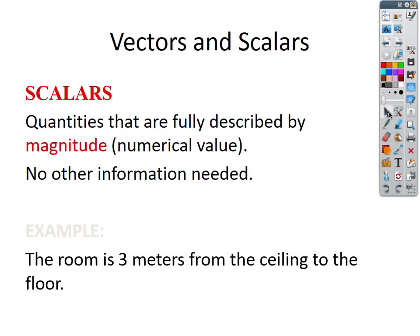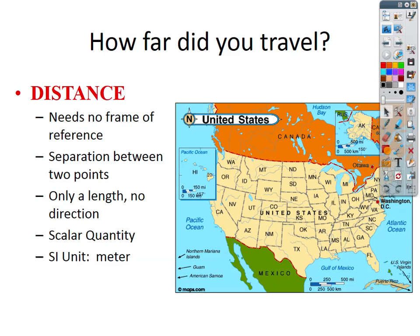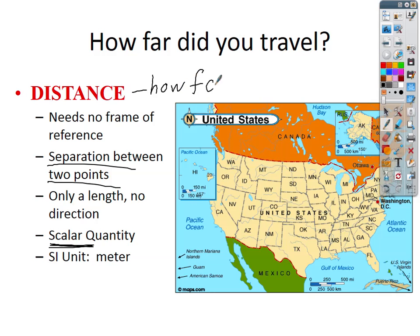It's like somebody telling you to go 2 miles, then 4 miles, then 6 miles — and you're going 'which way do I go to get to your house?' That could be anywhere. Distance does not need a frame of reference. It is simply the separation between two points — how far apart they are. It's not a direction, therefore it's a scalar value. Distance is the scalar quantity saying how far something is. The SI unit for distance is meters, but it could be kilometers or centimeters.